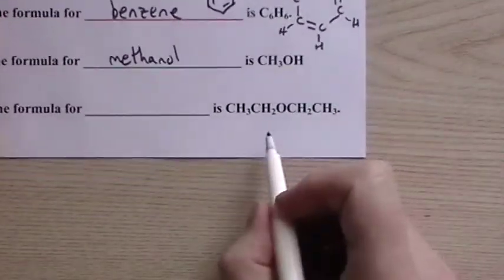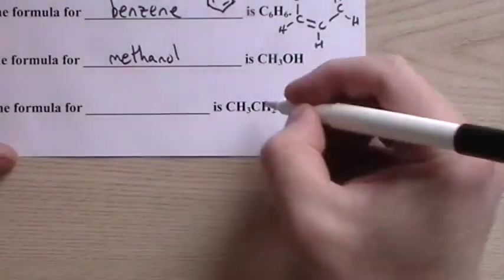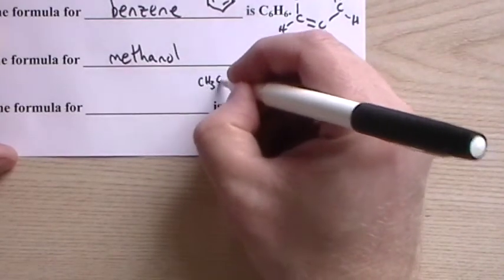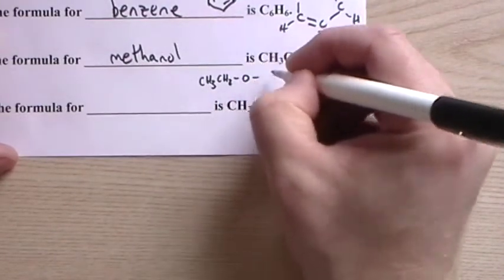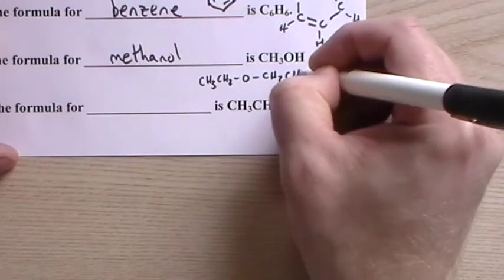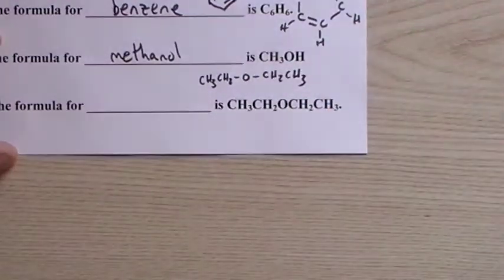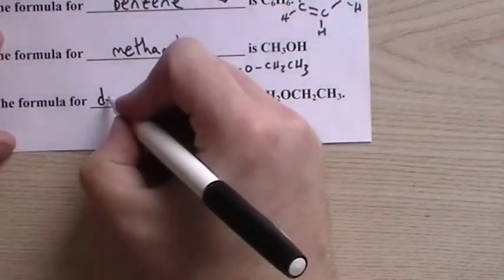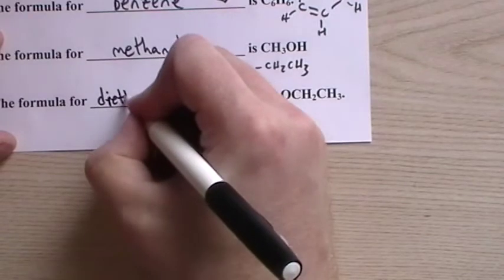And then this big guy here, there's an oxygen in the middle. The way that you can also draw it is to show that bond between the carbons on either side to that oxygen. This is called diethyl ether and it's such a common ether.